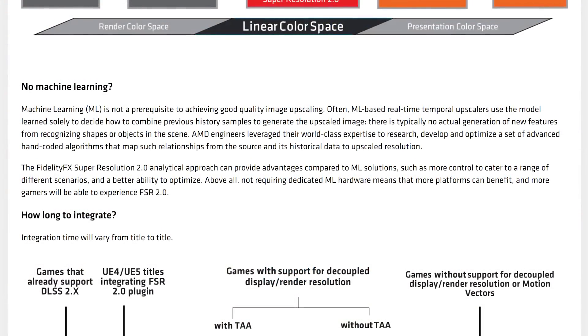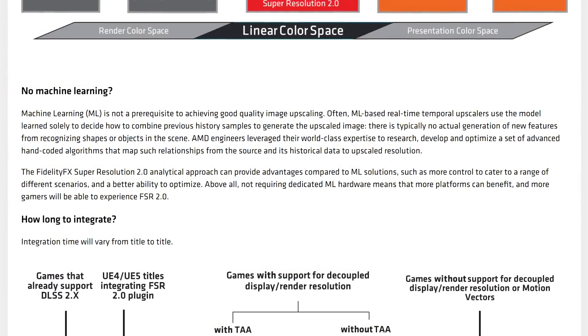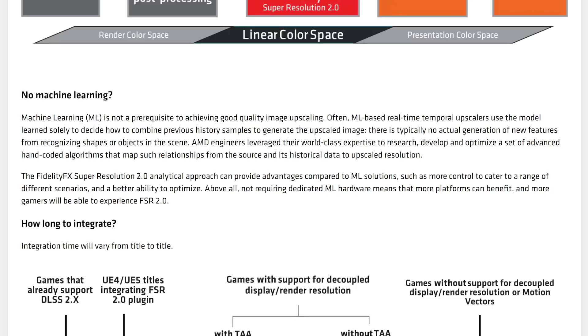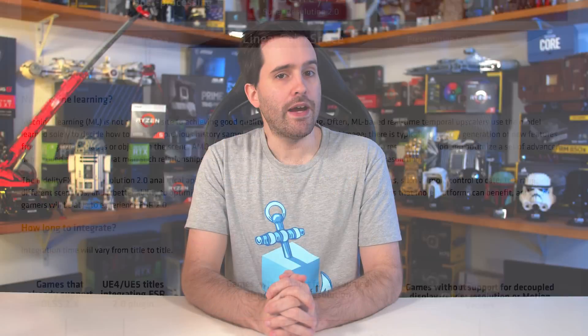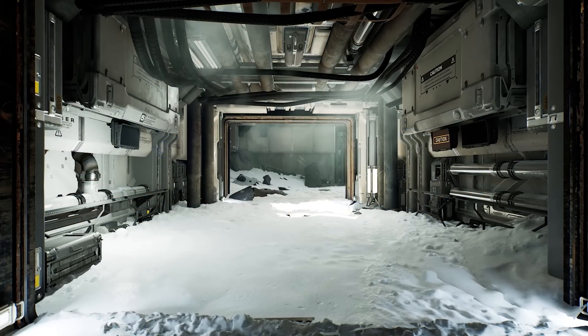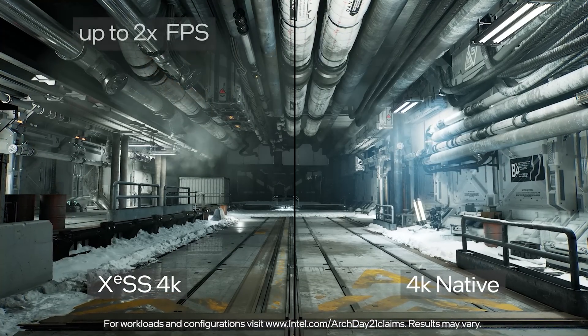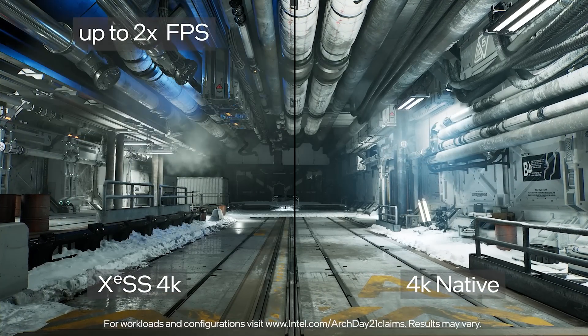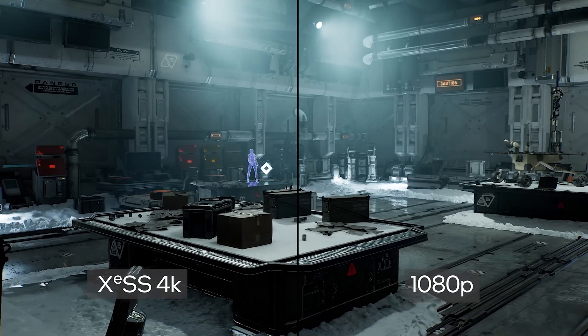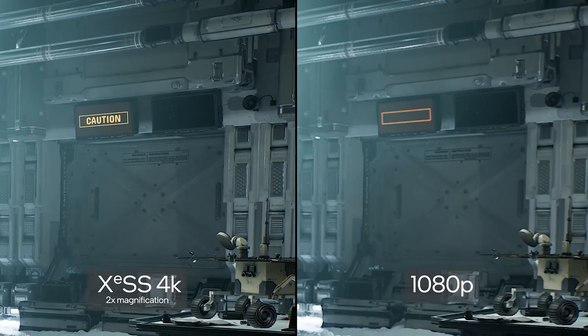AMD claims that ML-based upscalers use the model learned solely to decide how to combine previous history samples to generate the upscaled image, and there is typically no actual generation of new features from recognizing shapes or objects in the scene. Based on our understanding of how DLSS 2.0 works, this is accurate — NVIDIA has previously told us that the AI aspect of DLSS is mostly about making decisions on how to combine all the data inputs. But ultimately, everything AMD is saying about their decision not to use machine learning is just bold talk at the moment. The end result is really what matters, and comparisons between FSR 2.0 and DLSS have been quite limited. Soon we'll have to throw Intel's XeSS into the mix as well, which is also an AI-based temporal upscaling solution. AMD might have been able to create an algorithm that works as well as AI-enhanced technologies, but it's far too early to make that call, even if it looks promising in samples.